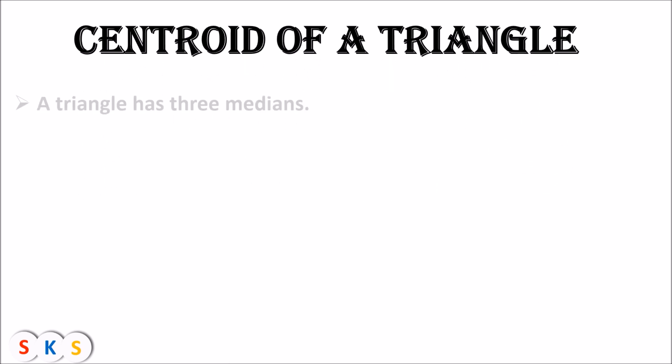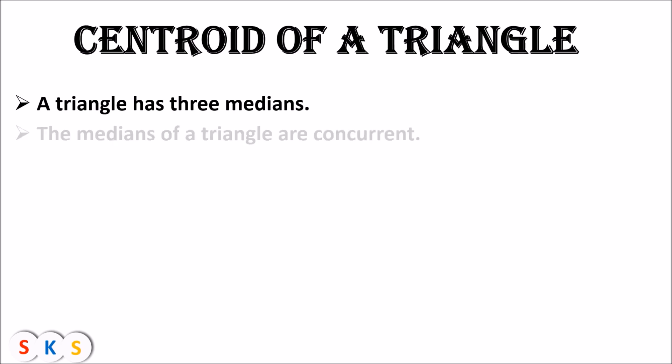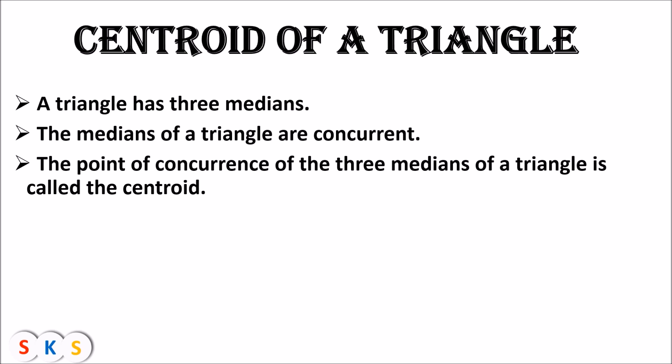Centroid of a triangle: what do you mean by the centroid of a triangle? Every triangle has three medians — from each corner we get one median. The medians of a triangle are concurrent, meaning all three medians pass through a single point. The point of concurrence of the three medians of a triangle is called the centroid.